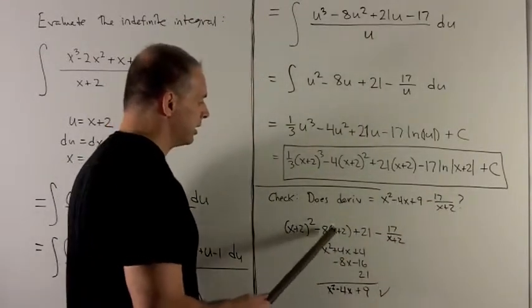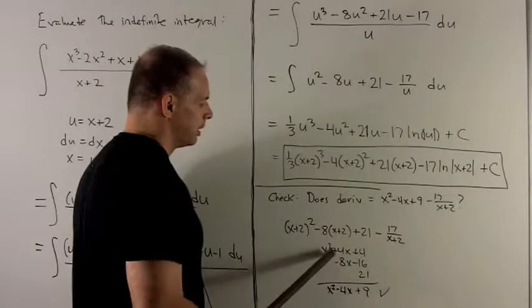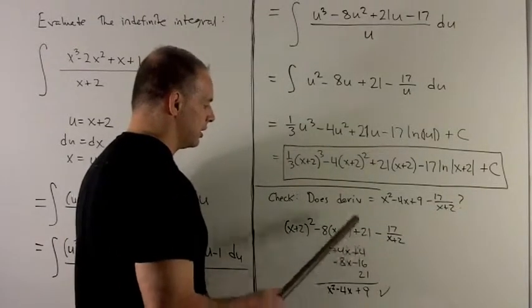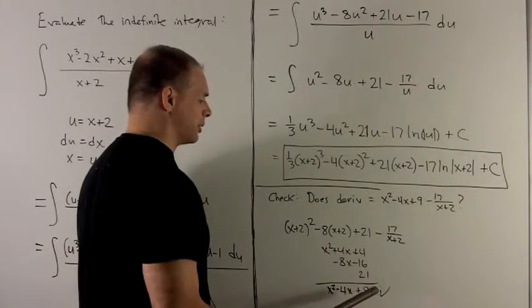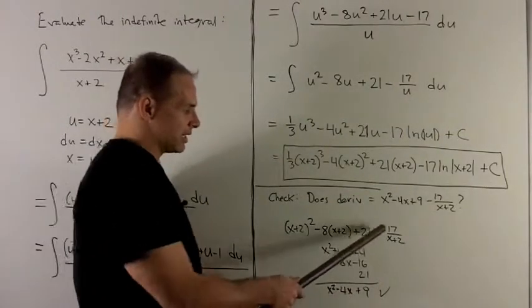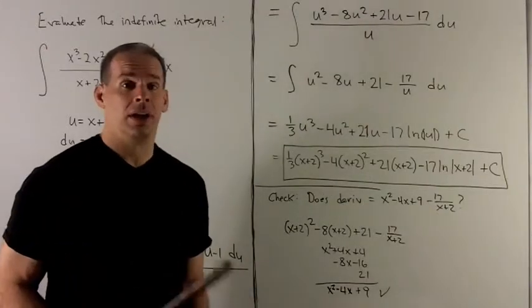I expand these two terms. So, we get this and this, and I add everything up. And I notice I get the x squared minus 4x plus 9 minus 17 over x plus 2, as promised.